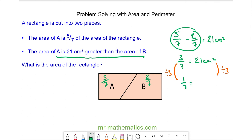So 1/7 is equal to 7 centimeters squared, and the area for the whole rectangle would be both sides multiplied by 7, which is equal to 49 centimeters squared.